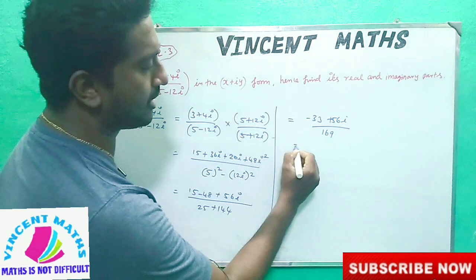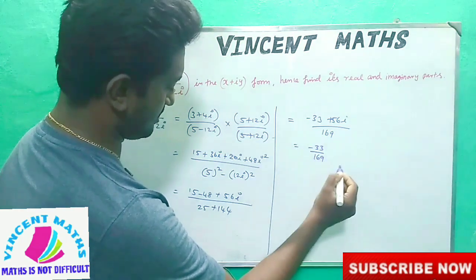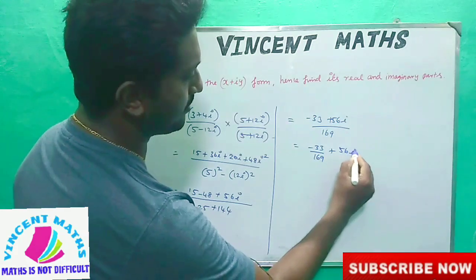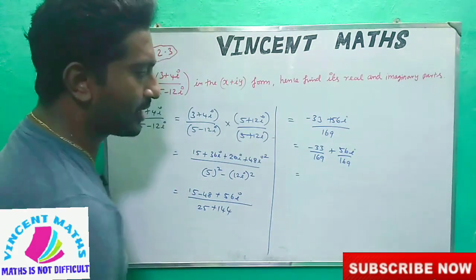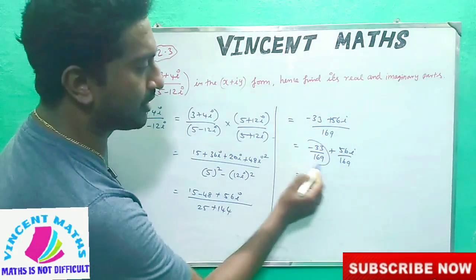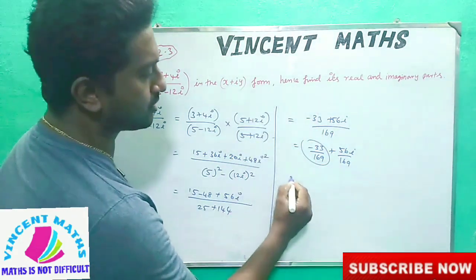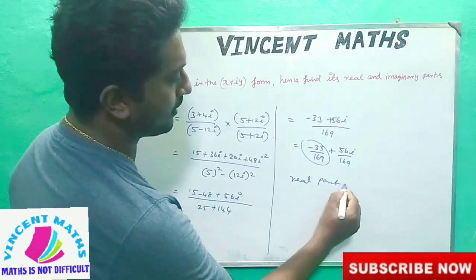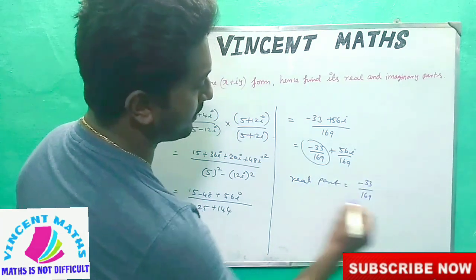169 is common in the denominator. So the final answer is: minus 33 by 169, plus 56i by 169. The real part is minus 33/169 and the imaginary part is 56/169.